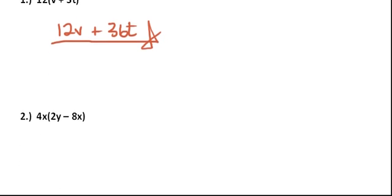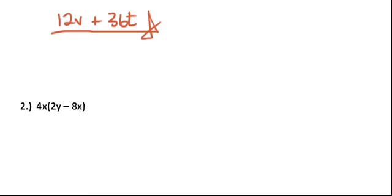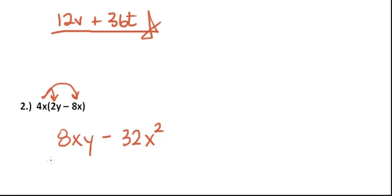In the second one, same sort of deal. You still distribute this out. So 4x times 2y would give us 8xy minus, since we have a minus here, 4x times minus 8x. And that would give us minus 32. Here the x's are like terms, so you can multiply them and you get x squared. So 8xy minus 32x squared is our answer.